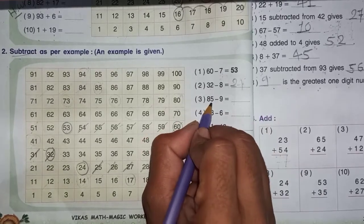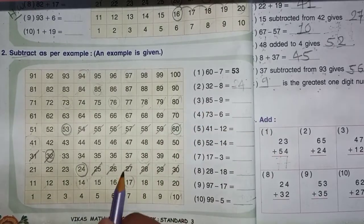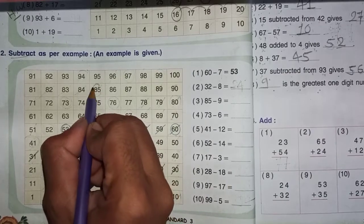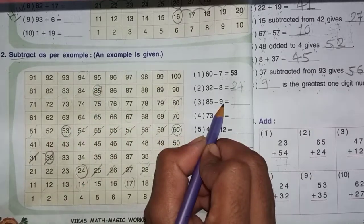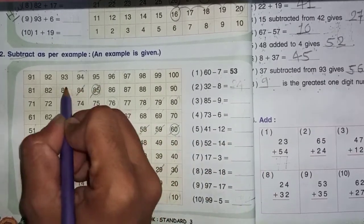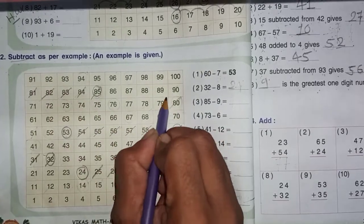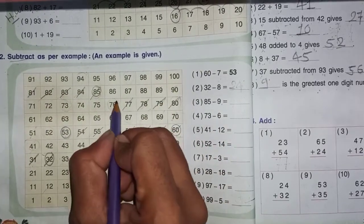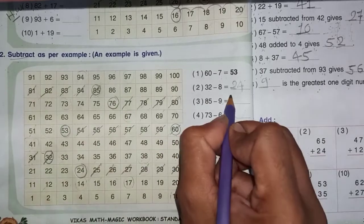Number 3, 85 minus 9. 85 is where? Look at this. Then we have 9 to subtract. Count backwards 1, 2, 3, 4, 5, 6, 7, 8, 9. How many? The answer is 76.